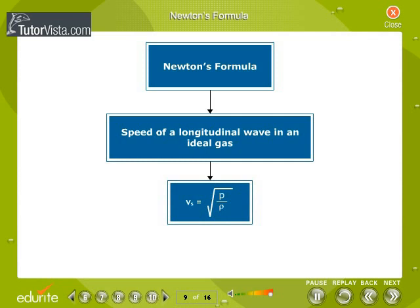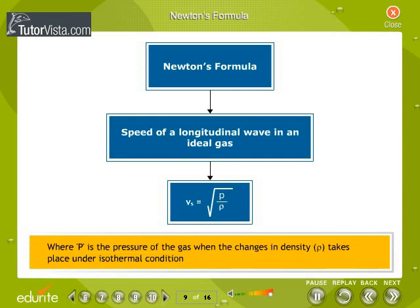Newton's formula Vs equals square root of P by rho gives the speed of a longitudinal wave in an ideal gas, where P is the pressure of the gas when the changes in density, rho, takes place under isothermal conditions.